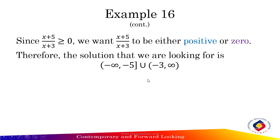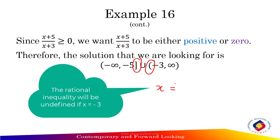Choose the intervals with positive signs: negative infinity to negative 5 and negative 3 to infinity. The solution is the union of these intervals. At negative 5 we use a closed interval because the inequality includes equal to zero, but at negative 3 we use an open interval because x cannot equal negative 3 — if x equals negative 3 the inequality is undefined, so negative 3 is not included.